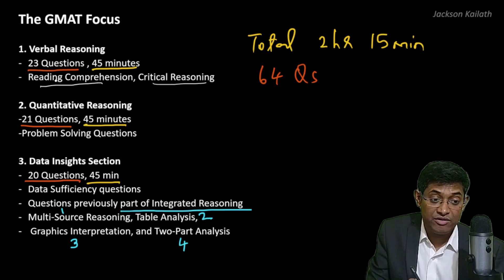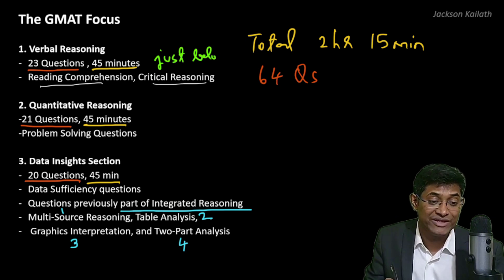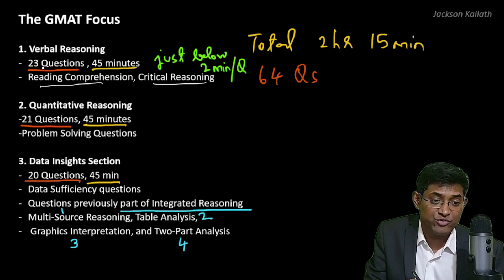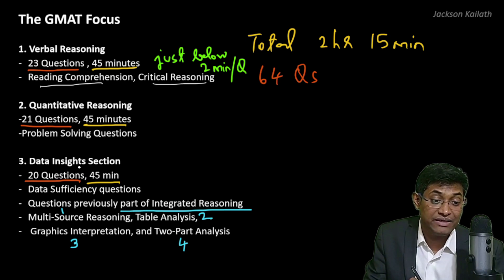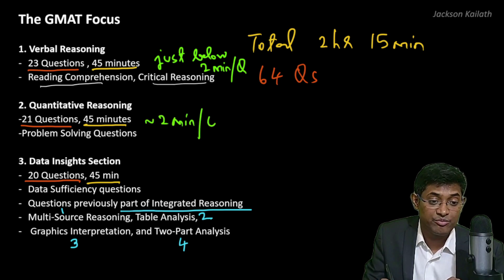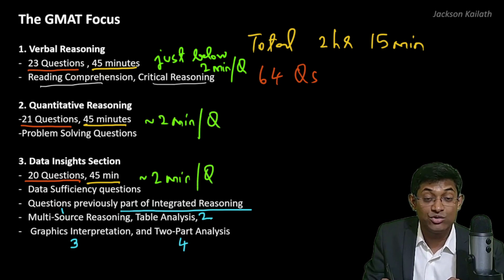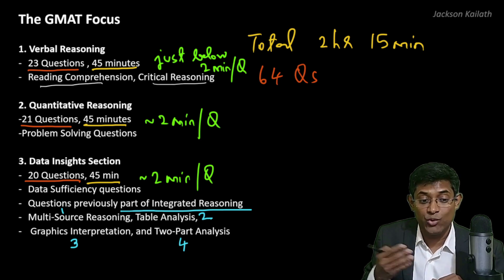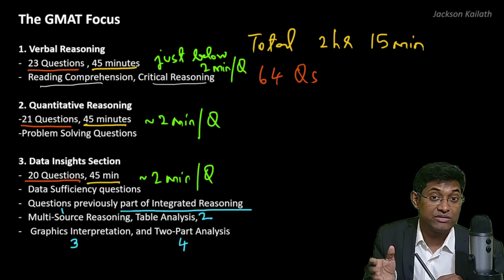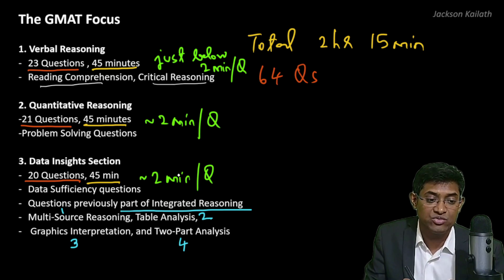For the verbal reasoning section, you're getting just below two minutes per question, since you have 23 questions and 45 minutes. For the quantitative reasoning section and the data insights section, you're getting a little bit above two minutes per question. It's good to practice once you are thorough with the topics — your aim should be to solve a question in about two minutes.